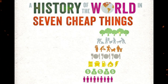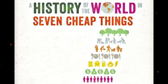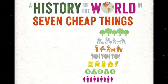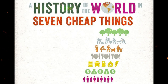This one-page guide includes a plot summary and brief analysis of A History of the World and Seven Cheap Things by Raj Patel. In their political polemic, published in 2017, left-wing writers Raj Patel and Jason W. Moore...